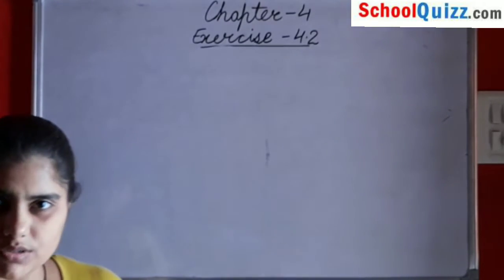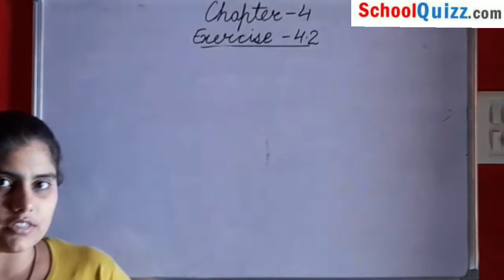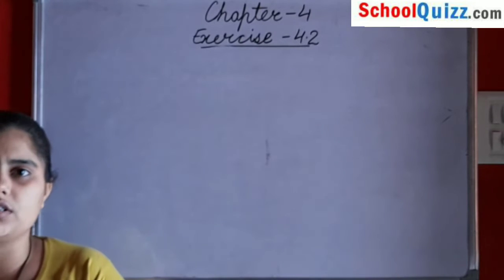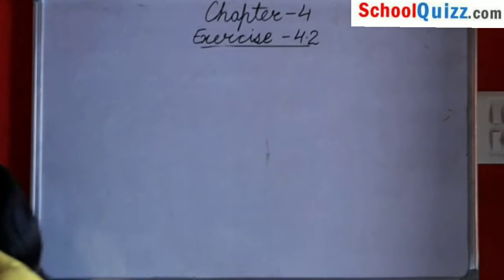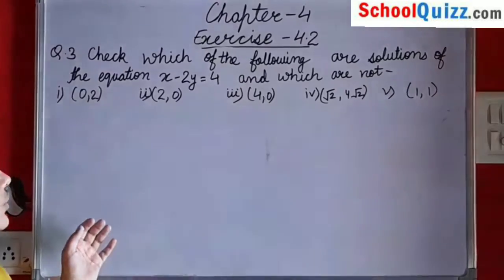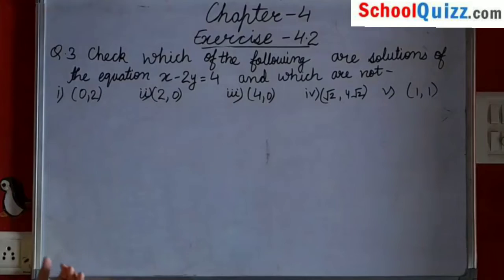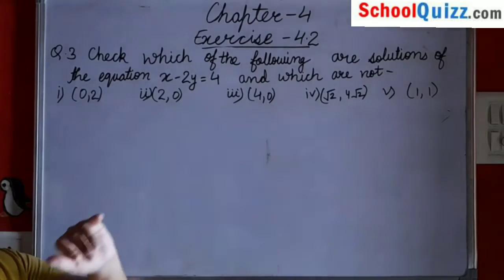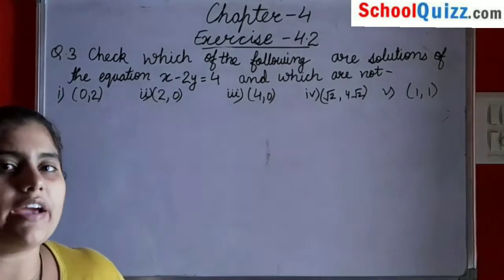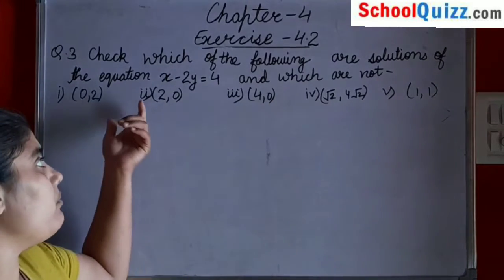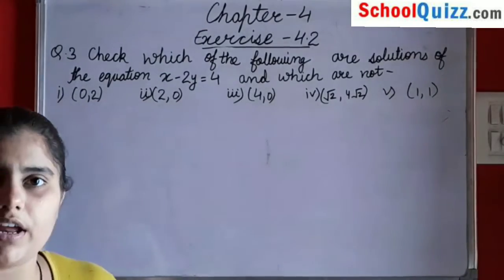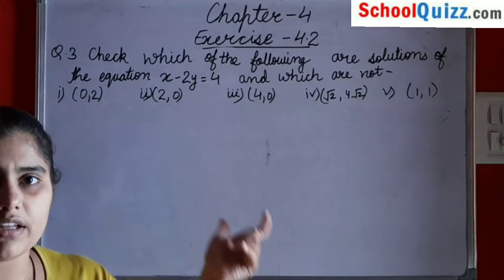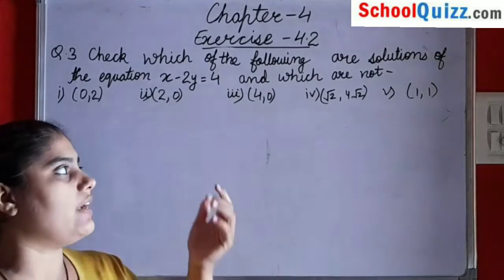Hello everyone, welcome to School Quiz. This is Sapna Soni here, and in today's class we are going to discuss the remaining questions of Exercise 4.2. Starting with question number three: check which of the following are solutions of the equation x minus 2y equals to 4, and which are not. We have to put the given values of x and y into the equation and check.